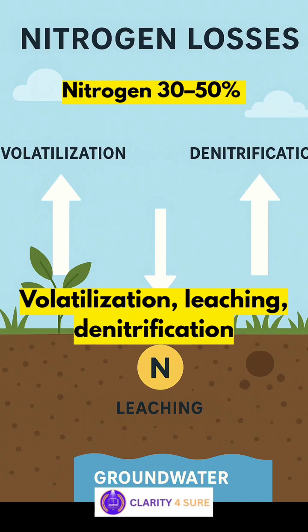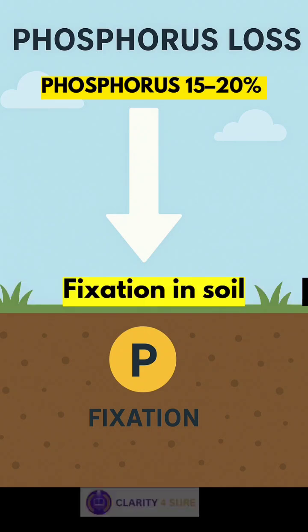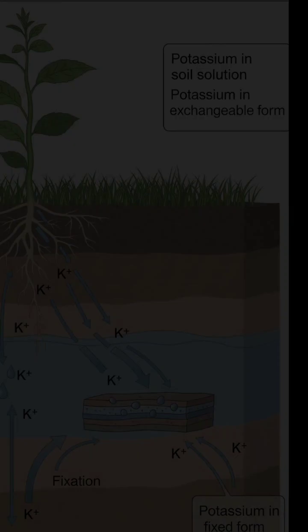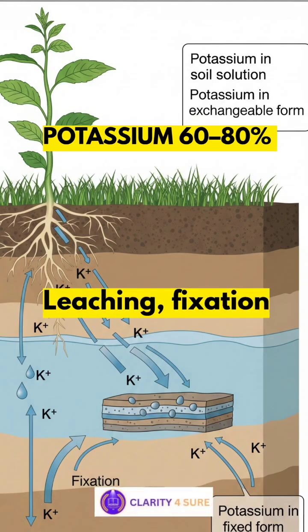Currently in India, nitrogen has an average efficiency of 30 to 50%, with major losses through volatilization, leaching, and denitrification. For phosphorus, it ranges from 15 to 20%, with losses due to fixation in soil. For potassium, efficiency is 60 to 80%, with losses due to leaching and fixation.